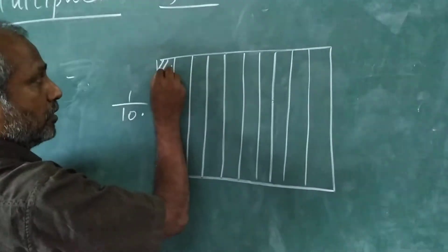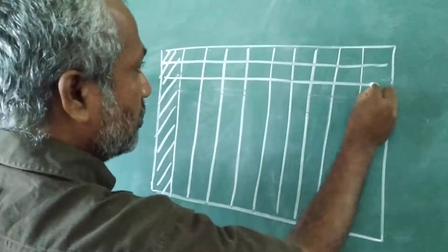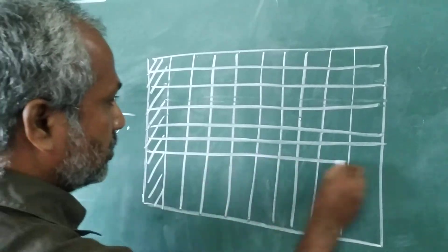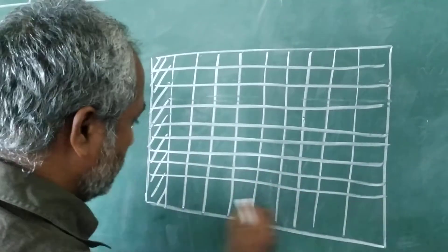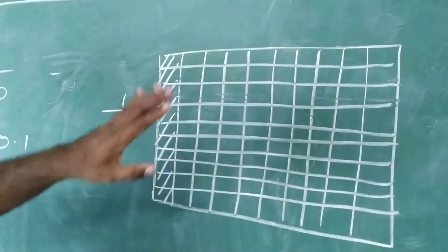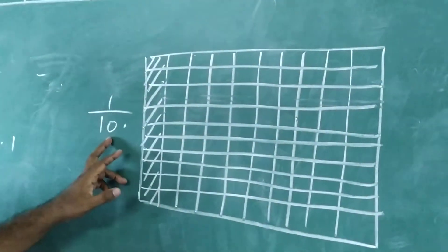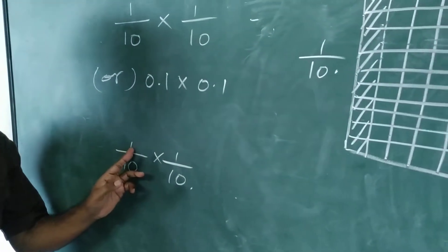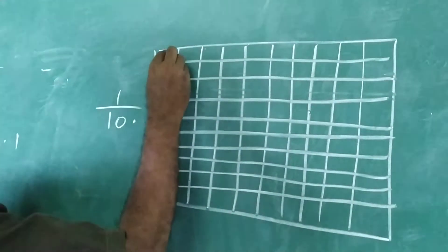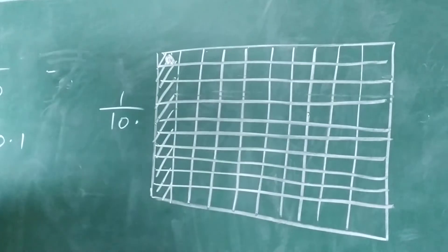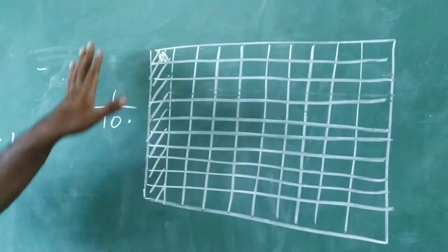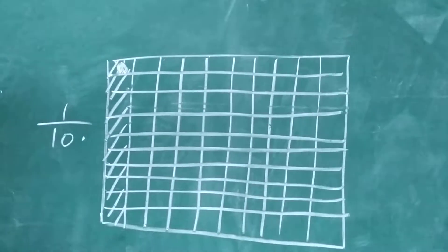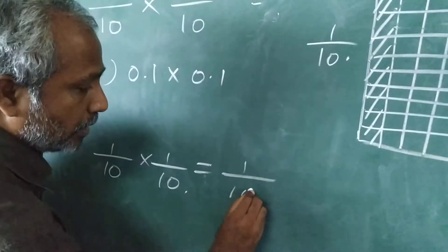I will move row-wise. This is 1 by 10, this is 1 by 10, this is 1 by 10. This is the 10 equal parts of 1 by 10. Now, out of that, we require only 1 part. So that part I am going to mark in a dotted portion. Out of this 100 equal parts, only we have 1 dotted portion. So 1 by 10 into 1 by 10 equals 1 by 100.